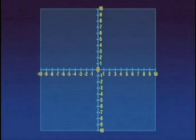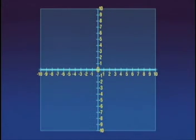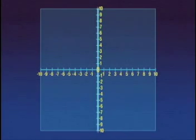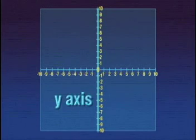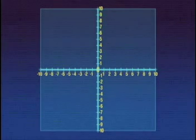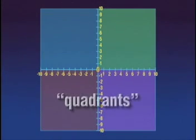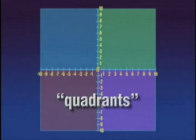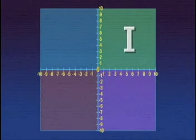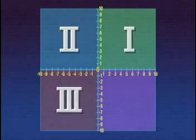Each number line now has a special name. The horizontal number line is called the x-axis, and the vertical number line is called the y-axis. The x and y-axis divide the plane into four sections called quadrants, labeled counterclockwise as the first, second, third, and fourth.